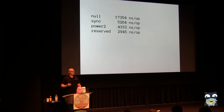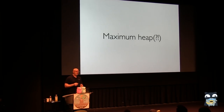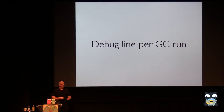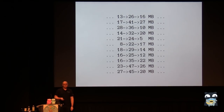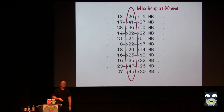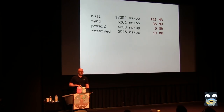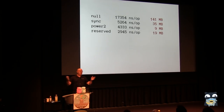To find the maximum heap used by each strategy, I couldn't find an obvious existing tool, so I fell back on something low-level but effective. The GODEBUG environment variable can turn on garbage collector tracing, producing a debug line per GC run. That line contains the maximum heap size at the end of the GC run. By parsing out that number, running it through sort -rn, I can find the maximum. The null strategy uses a massive amount of memory, declining through the strategies until reserved, where we keep lots of memory forever — and that's fine.